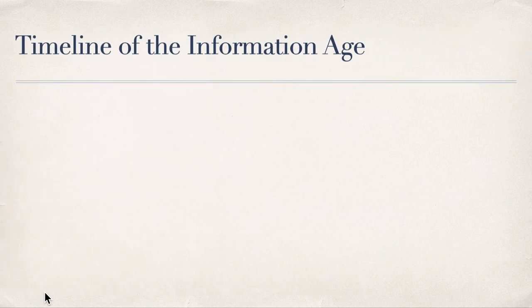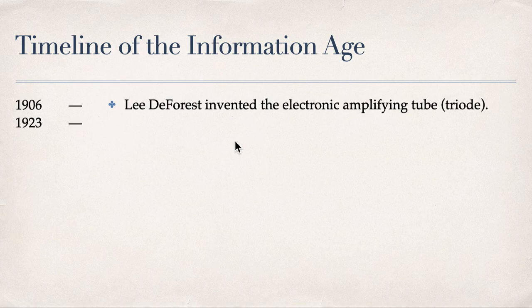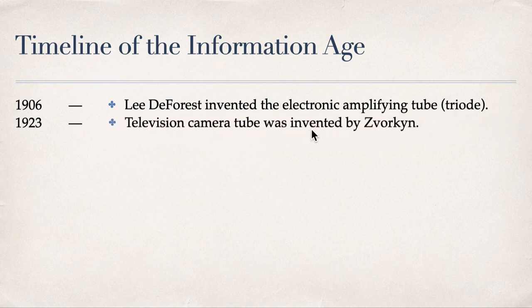We're now in the 20th century. In 1906, Lee DeForest invented the electronic amplifying tube, also called a triode. In 1923, the television camera tube was invented by Zworkin.